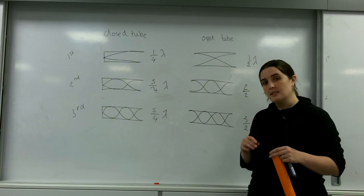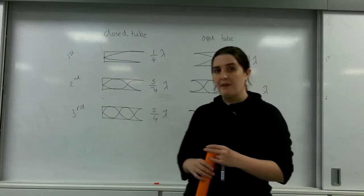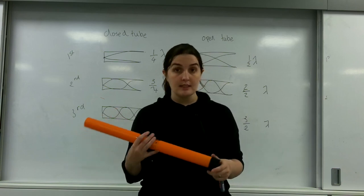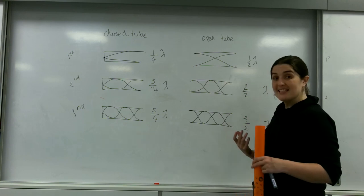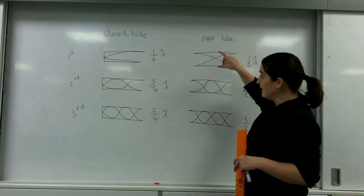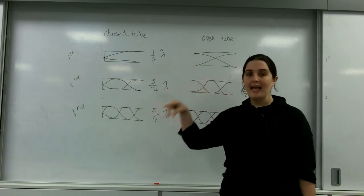This is slightly different for open tubes. Open tubes are a little bit weird. There are things like flutes or piccolos or recorders - they're the epitome of an open tube. Pan pipes again.